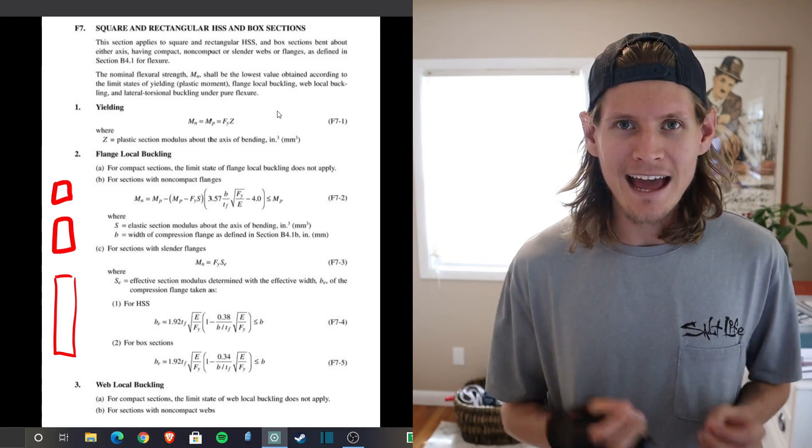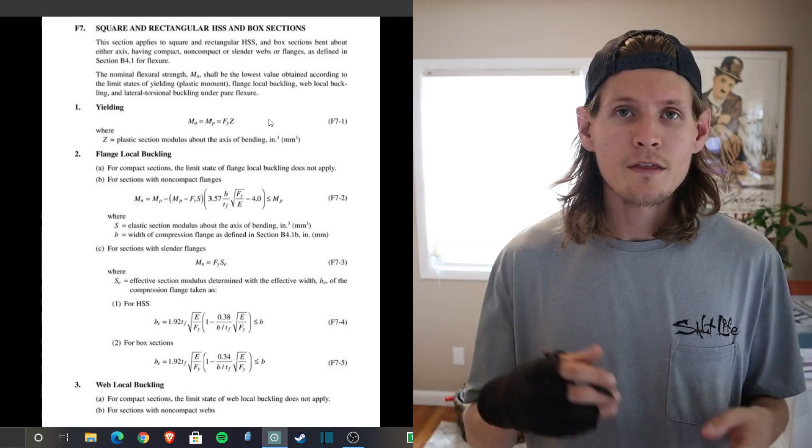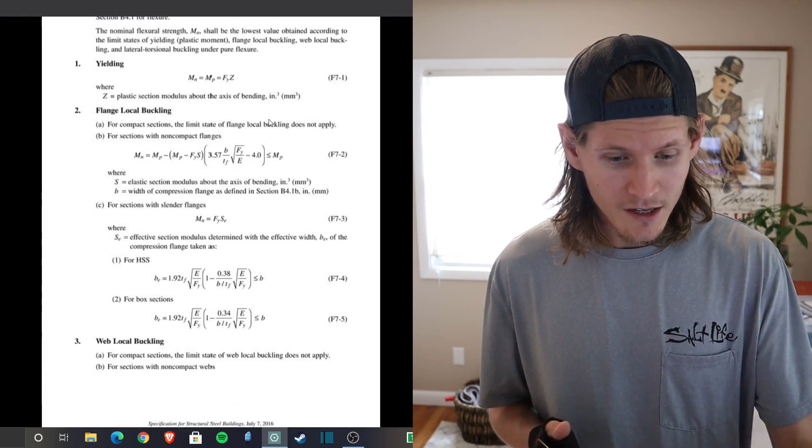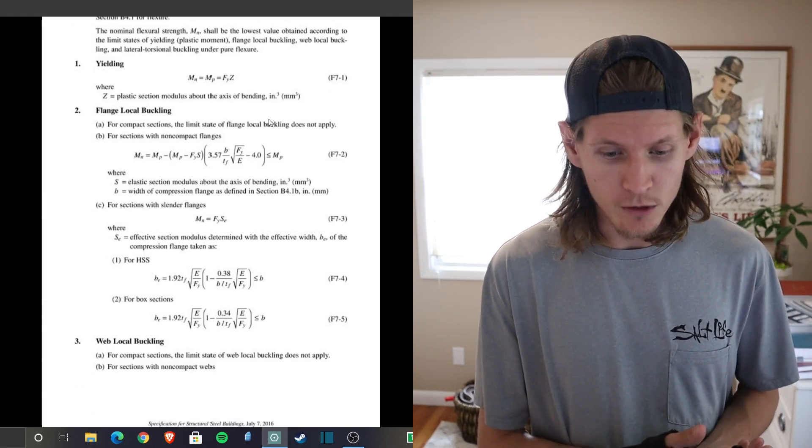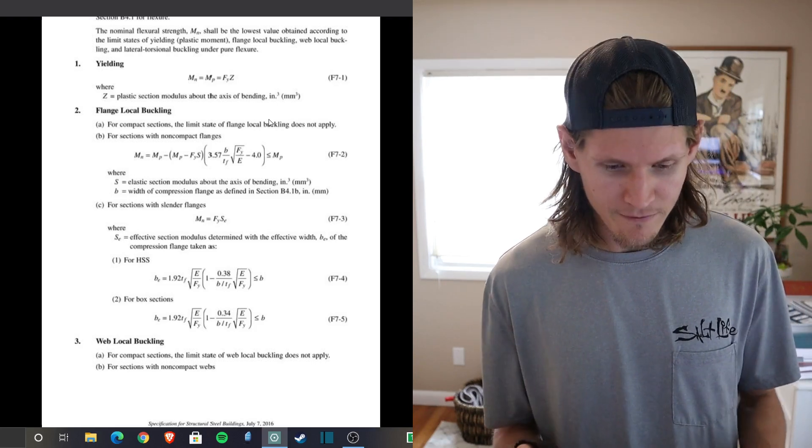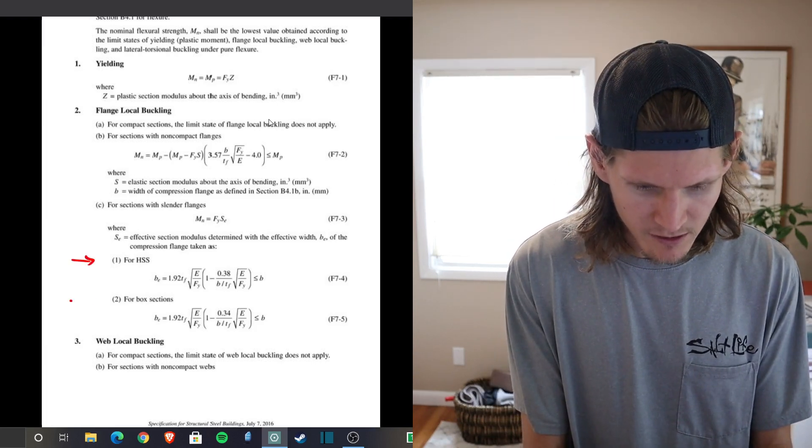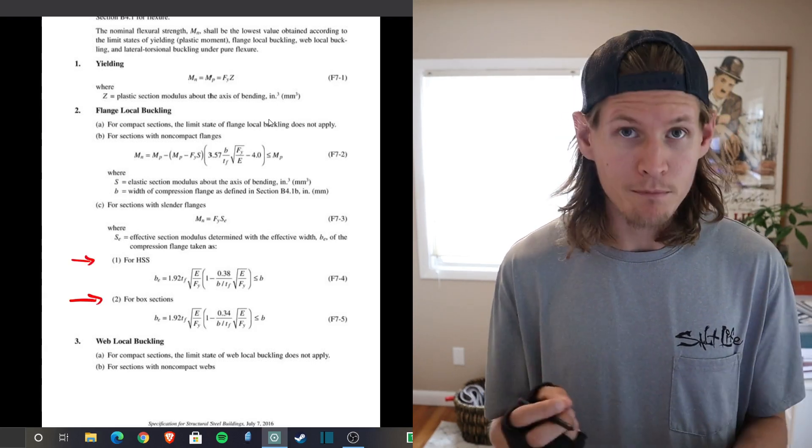In the 15th they now include an equation. They show you your different limit states: one being yielding, two being flange local buckling. An additional thing that they've added is actually they split it up into HSS and for box sections.